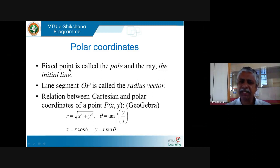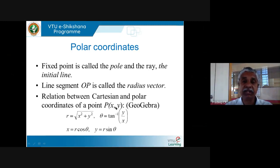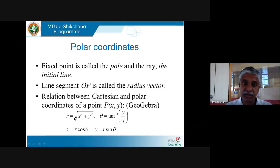I will always take angles counterclockwise — let's keep that as a general convention. That fixed point is called the pole, the ray is called the initial line, and the line segment OP is called the radius vector. We also saw the relationship between Cartesian and polar coordinates: given x and y, r is the square root of x² + y², and θ is tan⁻¹(y/x). Conversely, given r and θ, you can find the Cartesian coordinates x and y.